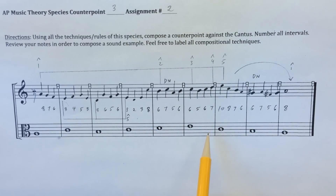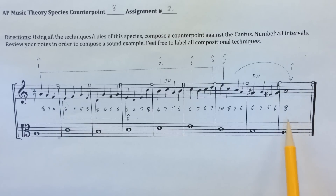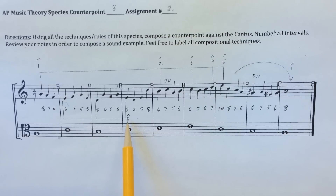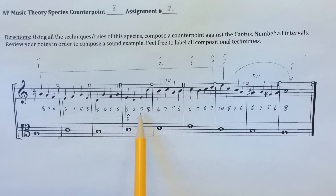5ths and 8ths are hollower intervals — they lack overtones and they're not as rich as your 6th, your 10th, and your 3rd. The exercise needs to end on an octave or a unison. You should not have unisons on downbeats, just as you shouldn't have octaves. But you can have unisons on 2nd, 3rd, and 4th beats.